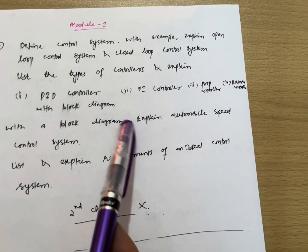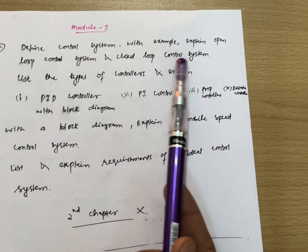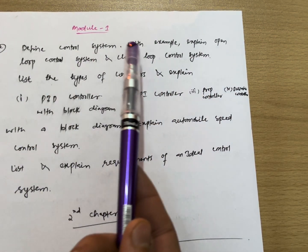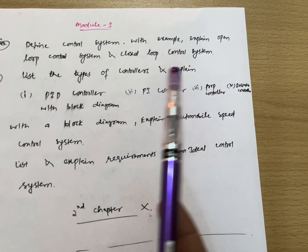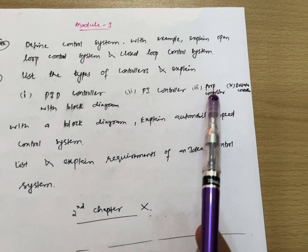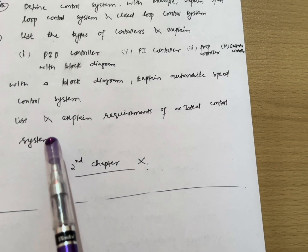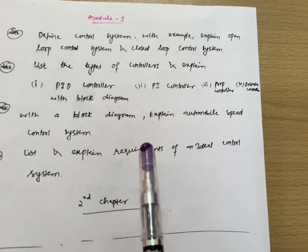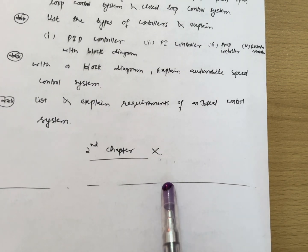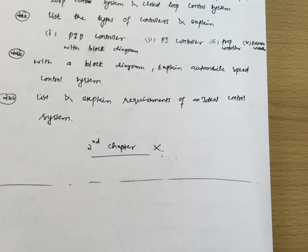For Module 1 there are four questions: define control system with examples; explain open loop and closed loop control systems, or comparison between them; list the types of controllers and explain PID, PI, proportional, and derivative controllers with block diagrams; explain automobile speed control system; and list and explain requirements of an ideal control system. These four questions are enough to cover Module 1 — you can neglect the other parts of this module.